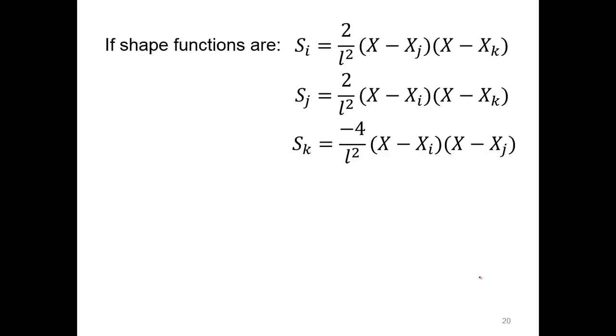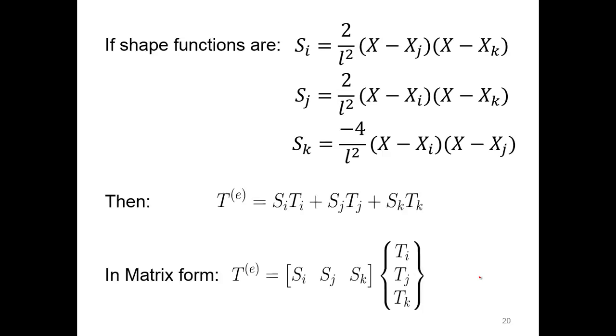There's our shape functions for node I, J, and K. We can have them in our function there. They look the same in matrix form now. Instead of a one by two for linear functions, now we got a one by three for shape functions.